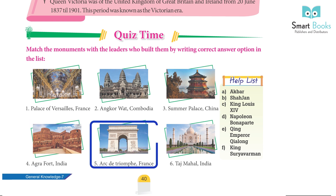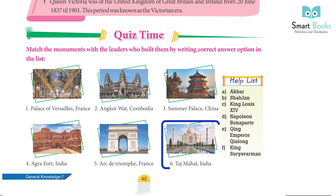5. Arc de Triomphe, France – Napoleon Bonaparte. 6. Taj Mahal, India – Shah Jahan.